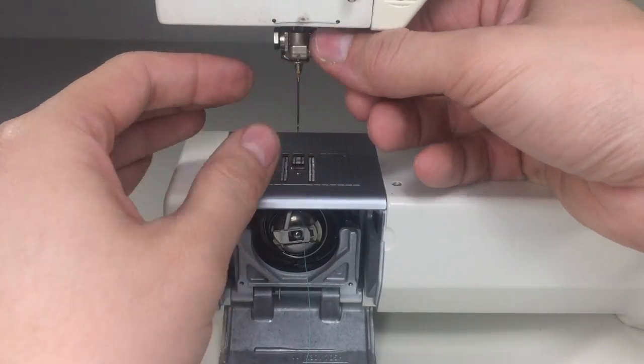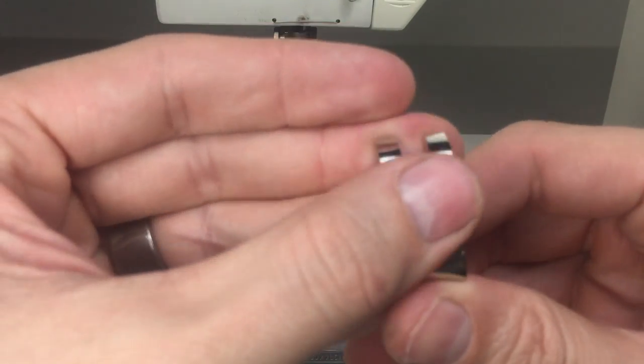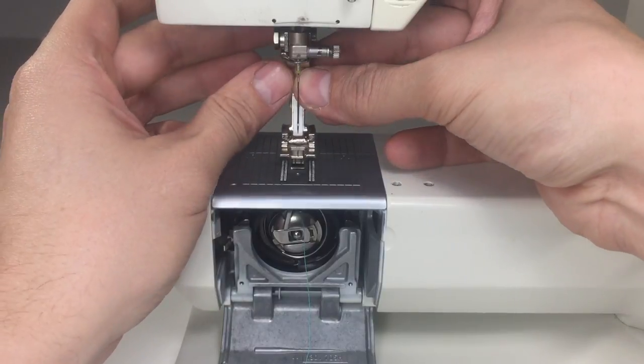When you reinstall your needle, be sure to push it as far up as possible in the needle bar, and tighten down the needle set screw just finger tight. It's always a good idea to make sure that the bottom of your presser foot looks nice and smooth as well.